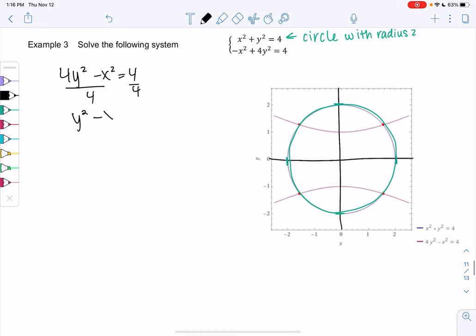y squared minus x squared over 4 equals 1. And I sketched the hyperbola to save us some time. I just wanted us to visually see that there's multiple solutions here.